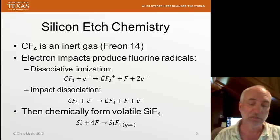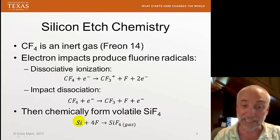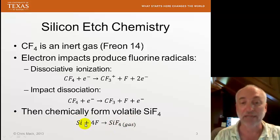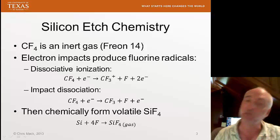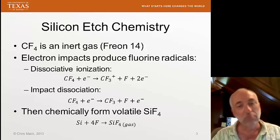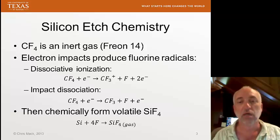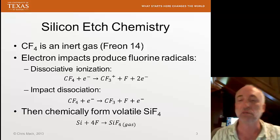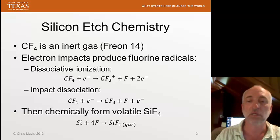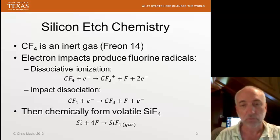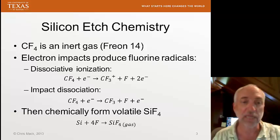That bottom reaction is not a mechanism — there are actually a lot of intermediate steps. First one bond is broken, then another, then another. Multiple fluorines combine through many intermediates. But the end result is the formation of a volatile gas that enables the etching.